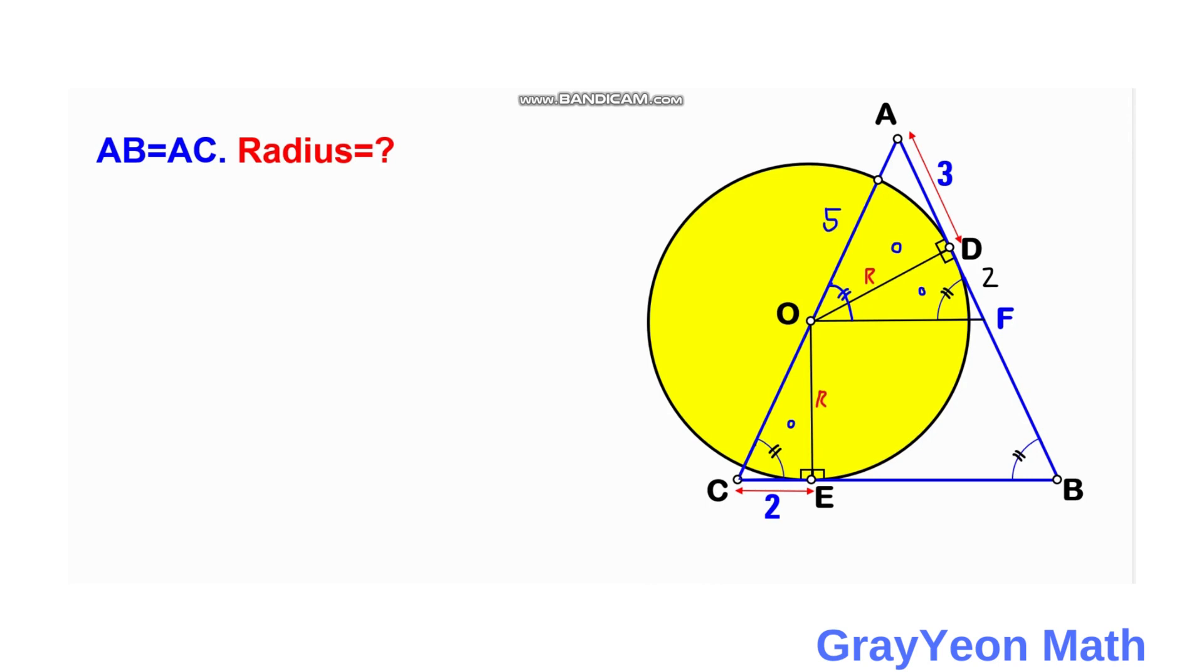We are to find OD, which is also r, the radius that we are looking for. By the Pythagorean theorem, OD equals the square root of AO squared minus AD squared, so OD equals the square root of 5 squared minus 3 squared.